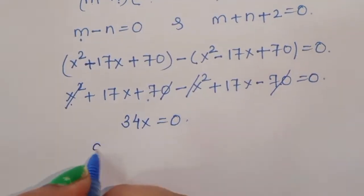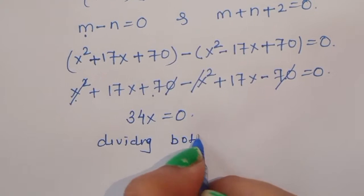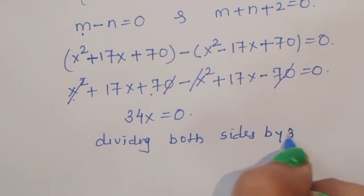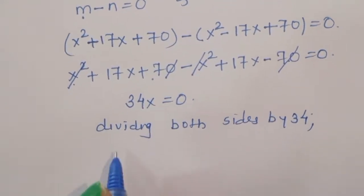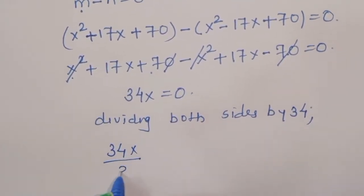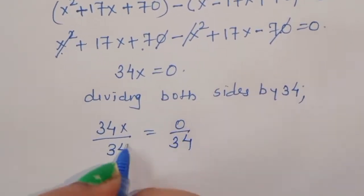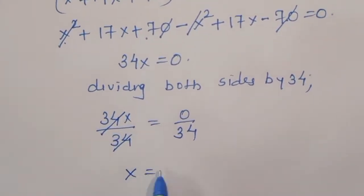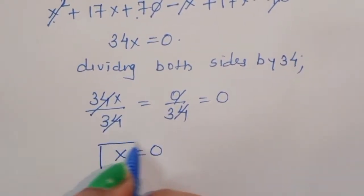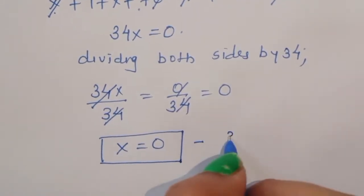Dividing both sides by 34, we get x = 0. So the first value of x is 0. This is equation number 1's solution.